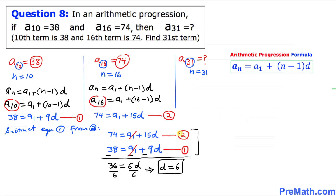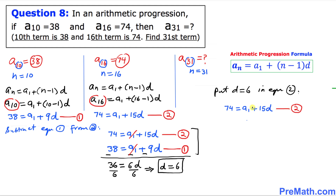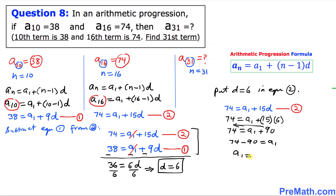Now we are going to find a(1). I am going to put d equals 6 into equation number 2. So: 74 equals a(1) plus 15 times 6, which gives 74 equals a(1) plus 90. Moving 90 to the other side: 74 minus 90 equals a(1). That means a(1) turns out to be negative 16.